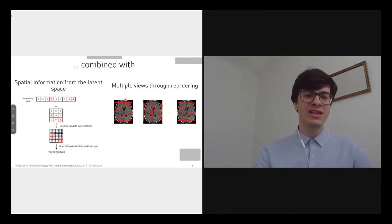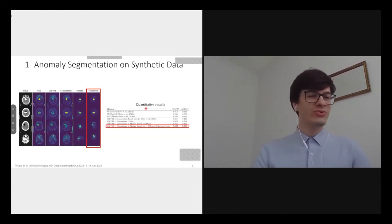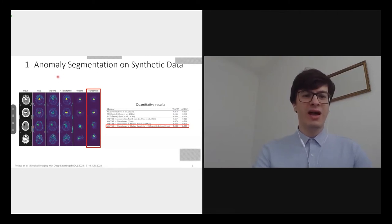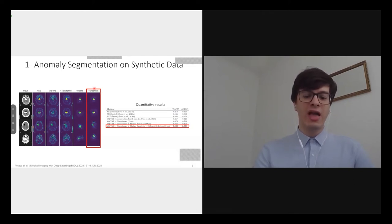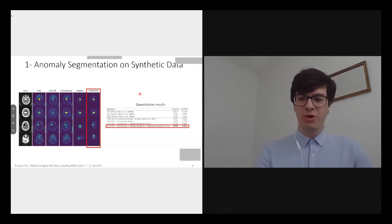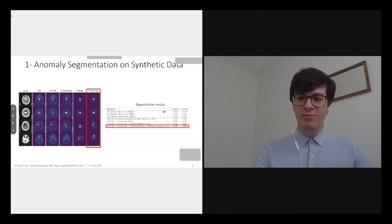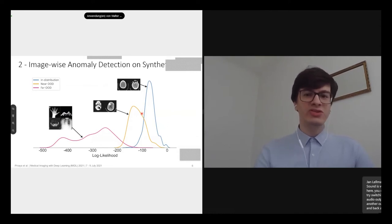With these models we also propose two mechanisms: the first uses spatial information from the latent space, and the second trains an ensemble of transformers where each model reads the input data in a different order. To validate our method, we applied it in a series of experiments. In the first, using anomaly segmentation on synthetic data, our method identifies fewer false positives compared with the variational autoencoder-based approach, and the maximum Dice score grows from 0.5 with variational autoencoders to almost 0.9 with our method.